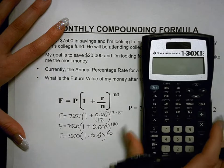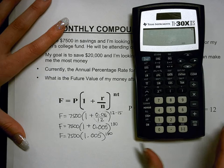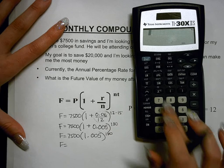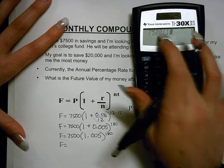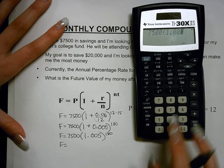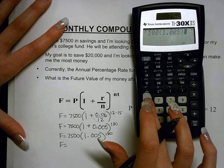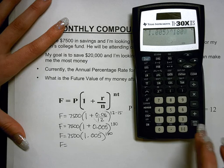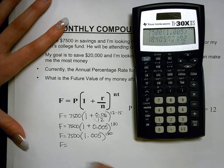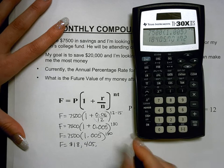At this point we can put this into our calculator. The future value is 7,500 multiplied by 1.005 raised to the 180th power. Using the caret symbol for the exponent and hitting enter, the future value of my money given these conditions is $18,405.70.